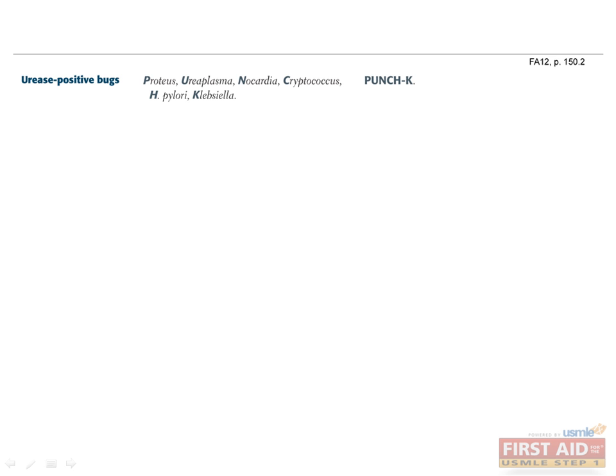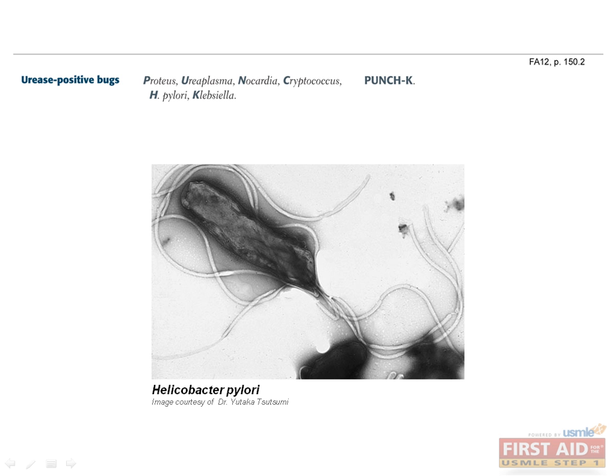Urease is an enzyme that catalyzes the hydrolysis of urea into carbon dioxide and ammonium. This characteristic of H. pylori forms the basis for the urease breath test as a diagnostic tool. Patients swallow radioactive urea and the detection of isotope-labeled CO2 from the patient's exhaled breath indicates that urease-producing H. pylori bacteria is present in the stomach and has split the urea into CO2 and ammonia.